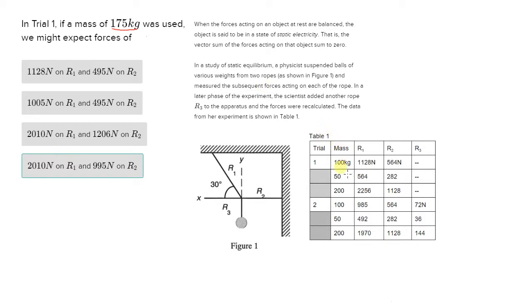And 175 kilograms is right between, it's actually not exactly in the middle, but it's between 100 kilograms and 200 kilograms. So we should expect the forces to fall somewhere between 1,128 Newtons and 2,256 Newtons for R1, and 564 Newtons and 1,128 Newtons for R2, probably hovering a little closer to the forces of 200 kilograms because it's 175, not 125 or 150. So that's what we should expect as we're looking for this answer.